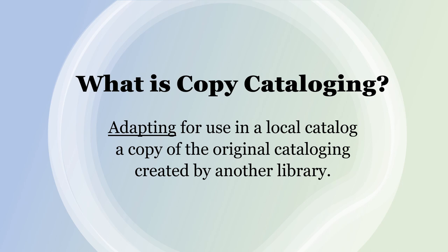Let's start with a definition. What is copy cataloging? Copy cataloging means adapting — and adapting is very important, we'll get more on that later — adapting for local use a catalog record, a copy of the original cataloging created by another library.